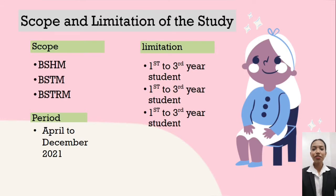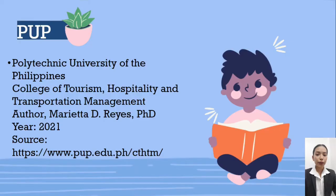Scope and limitation of the study: The study aims to evaluate the effectiveness of e-learning on hospitality skills. The study will be limited to first, second, and third year students. It will be conducted in April 2021, and there will be 450 respondents currently enrolled at Polytechnic University of the Philippines under the College of Tourism, Hospitality, and Transportation Management. The College of Tourism, Hospitality, and Transportation Management is a vital arm of Polytechnic University of the Philippines.